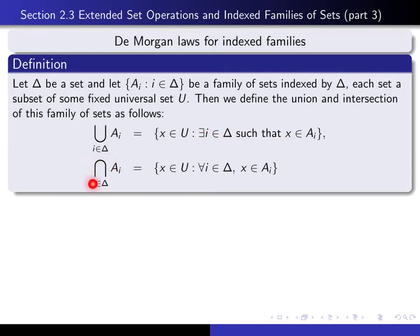And the intersection of all of the a's is the set of all x in our universe such that for every i in our indexing set, x is in a sub i. Thus, to say that x is in the union is to say there exists an i in the indexing set such that x is in a sub i, and to say that x is in the intersection is to say for every i in our indexing set, x is in a sub i.